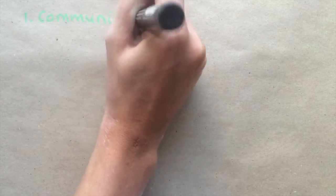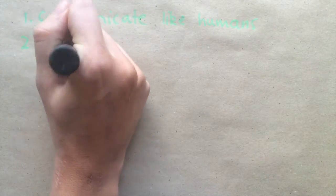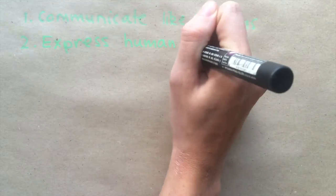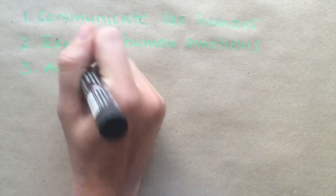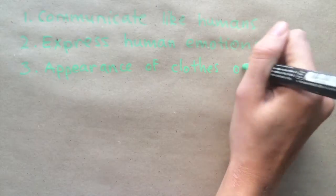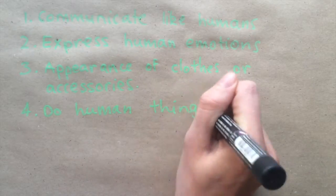Per definition, at least one of the following four criteria has to be fulfilled in order for anthropomorphism to take place in a commercial. The criteria are as follows: 1. The ability to communicate like a human being. 2. The ability to express human emotions. 3. The appearance of clothes or other accessories. And 4. The ability to do human things.